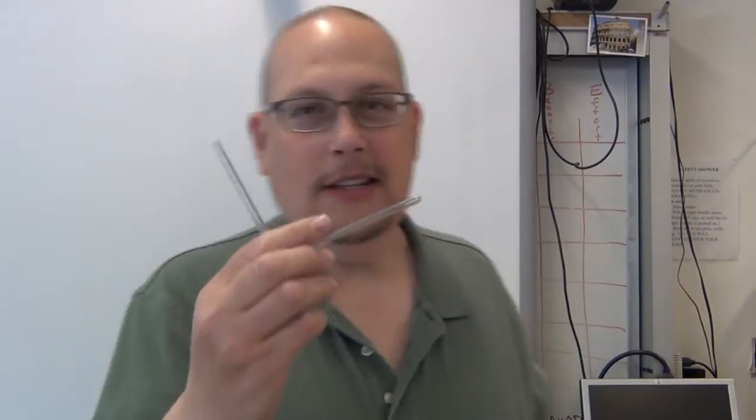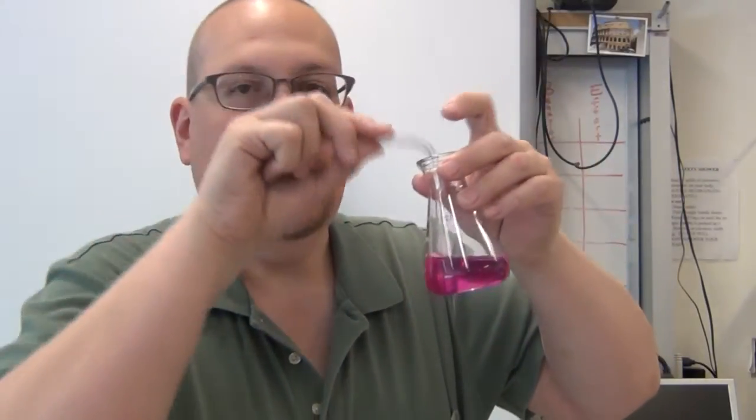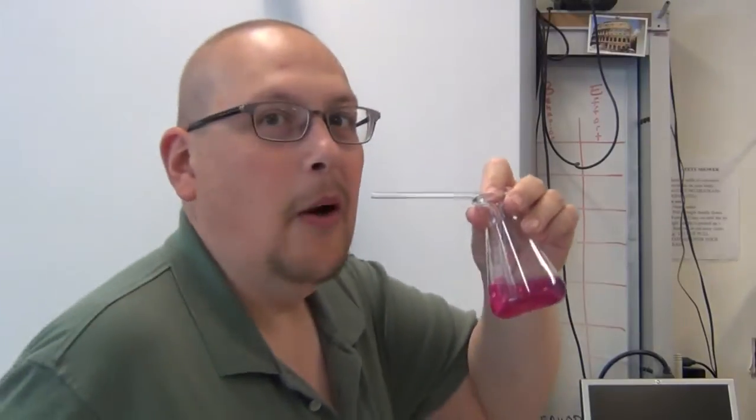And now, as promised, I'm going to prove to you that I have acid breath. Here's how. I'm going to take this straw. It's actually a piece of glass tubing. And I'm going to blow through this straw into this phenolphthalein like so. Are you ready? Okay, here we go.